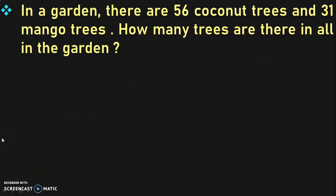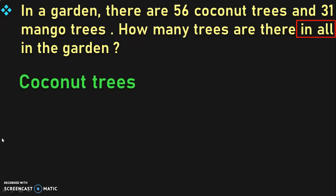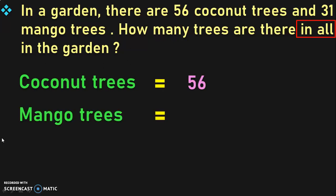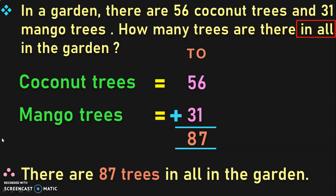In a garden, there are 56 coconut trees and 31 mango trees. How many trees are there in all in the garden? The keyword is 'in all'. Statements: Coconut trees = 56, Mango trees = 31. Write down the place values and begin from the 1's place: 6 plus 1 is 7, and 5 plus 3 is 8. Therefore, there are 87 trees in all in the garden.